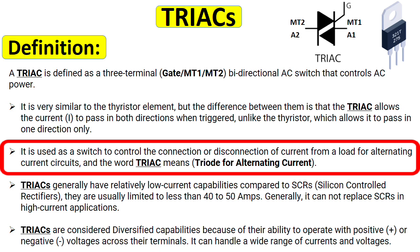It is used as a switch to control the connection or disconnection of current from a load for alternating current circuits. And the word TRIACs means triode for alternating current.